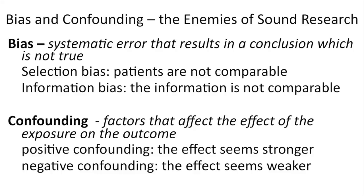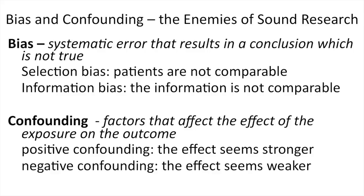For instance, in group A someone says yes, that's a myocardial infarction, but in group B the same people say no, that's not a myocardial infarction — this would be information bias. Then we have confounding, which means there is a confounding factor that affects the observed relationship between the exposure and the outcome. There could be positive confounding where the effect seems stronger, or negative confounding where the effect seems weaker.